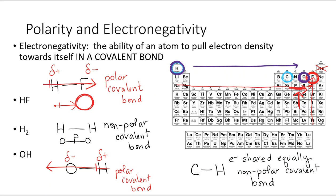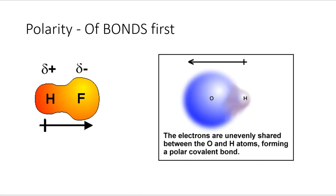Here's how you can tell: look at the periodic table — further to the right means more electronegative, which pulls the electron density towards itself. Now, looking at the images: fluorine is more electronegative than hydrogen, so it pulls the electron density and the electrons spend more time around the fluorine — that's why it's partially negative. Similarly, oxygen pulls the electron density towards itself, leaving hydrogen partially positive.